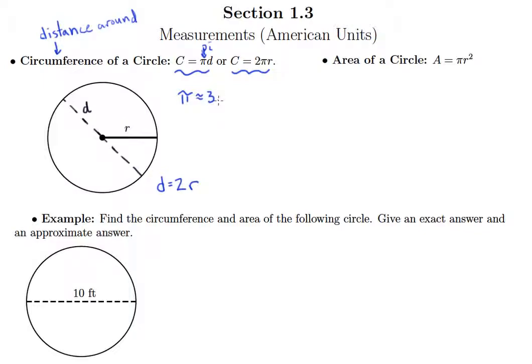But what we will do is when we want to use pi, we will use its approximation of 3.14. That's not exactly what pi is equal to, but it's rounded to the nearest hundredth place.